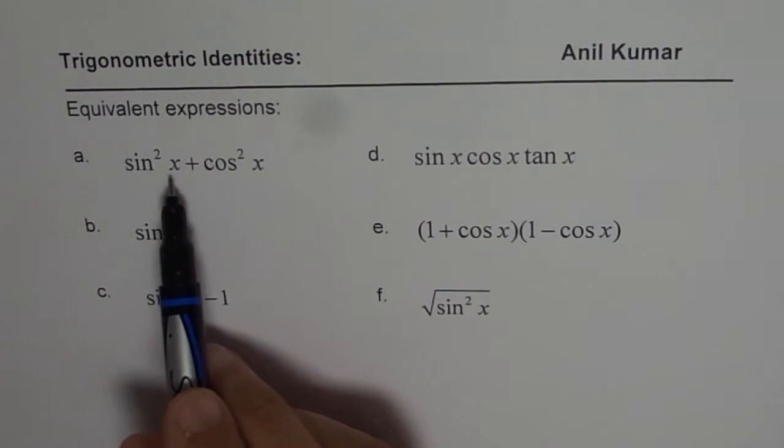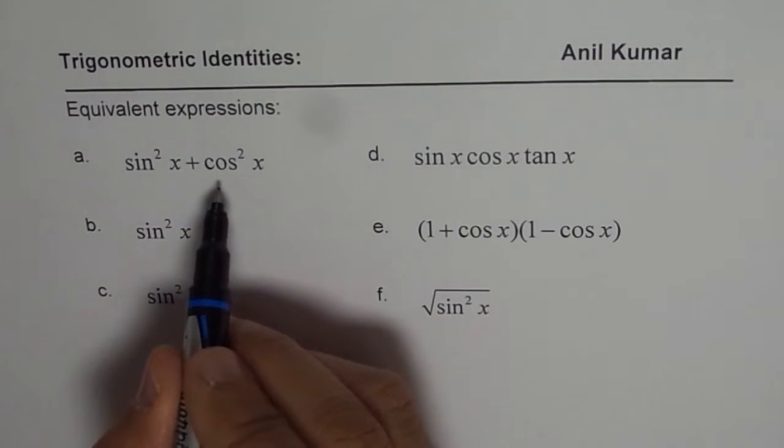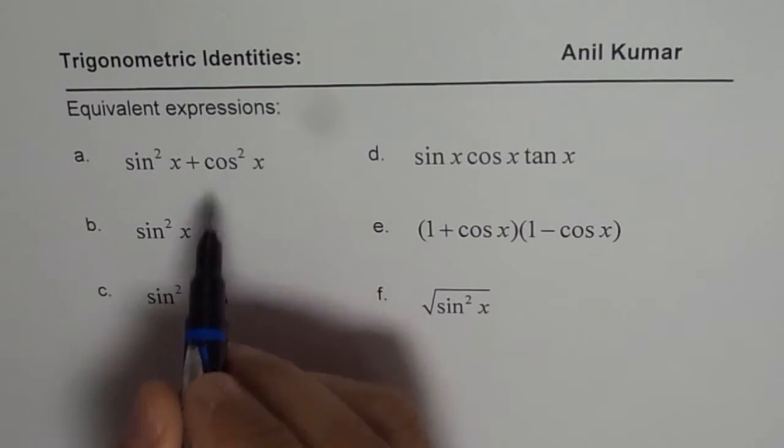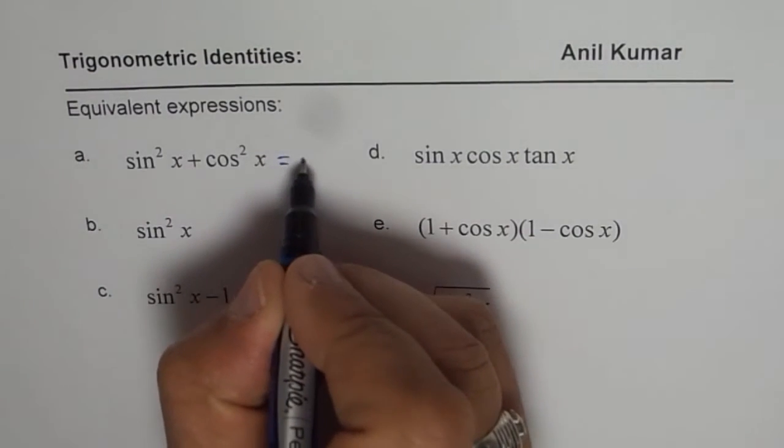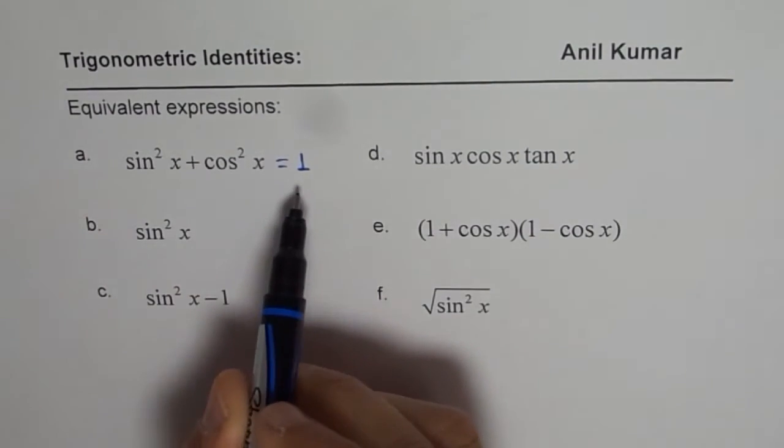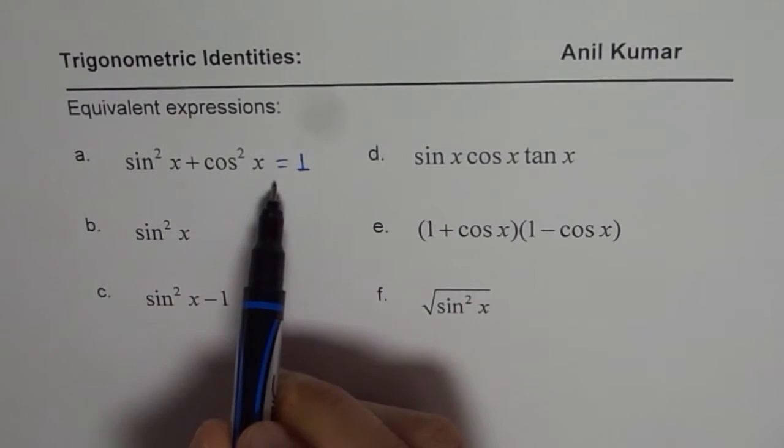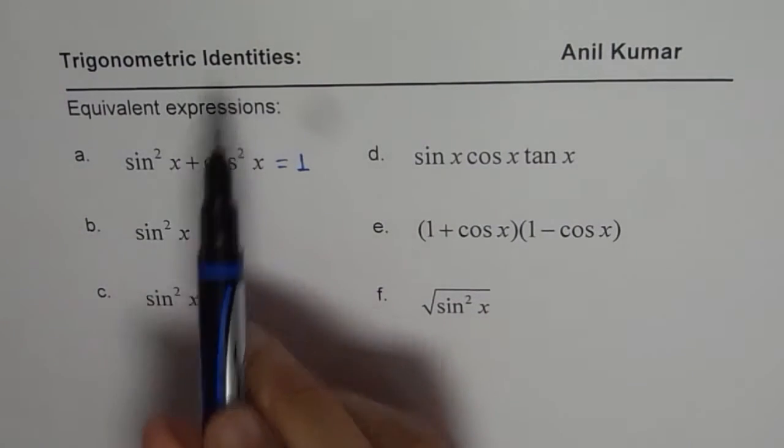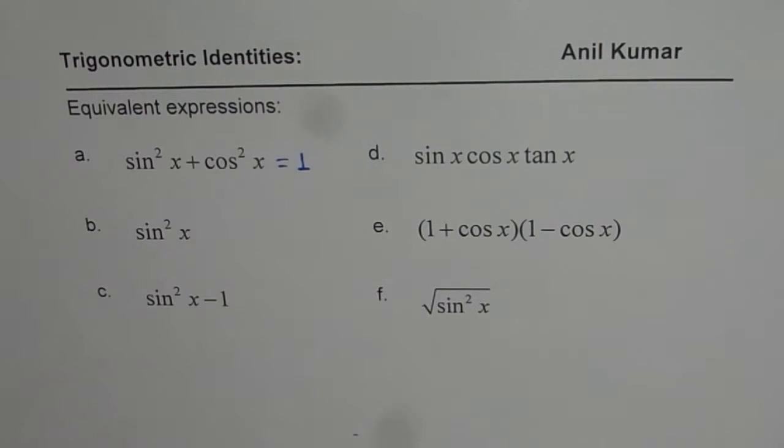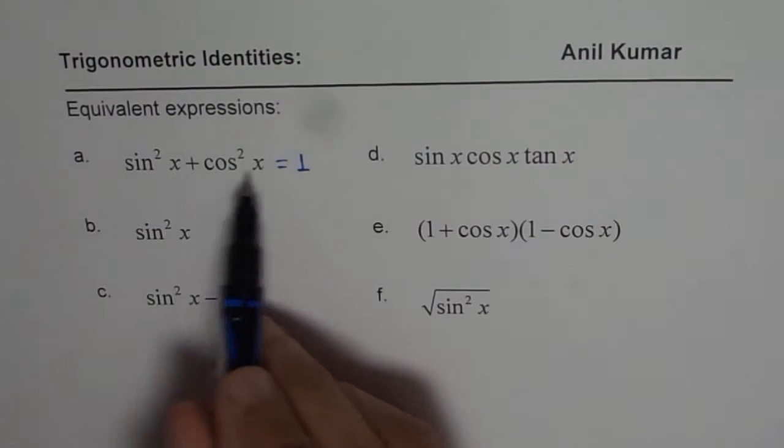The first one, sine square x plus cos square x, is the Pythagorean identity. And you know, it is equal to 1. And it is the most important identity to use for proving any trigonometric identity. So most of the time, you will be applying this identity.